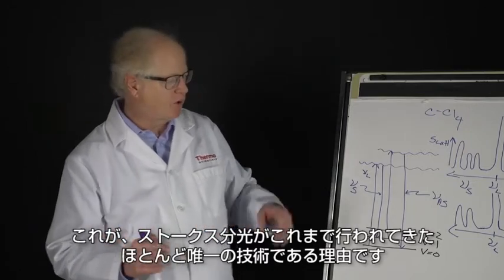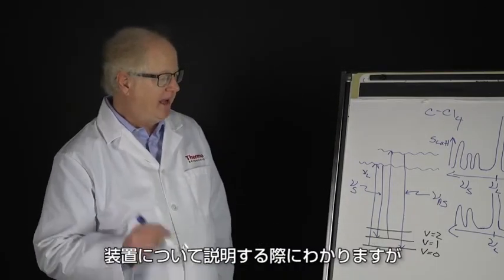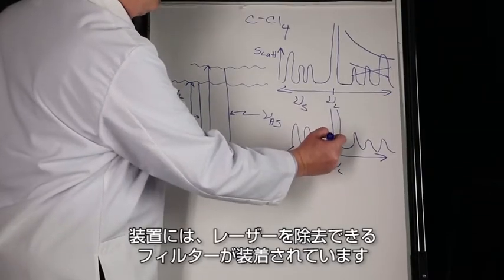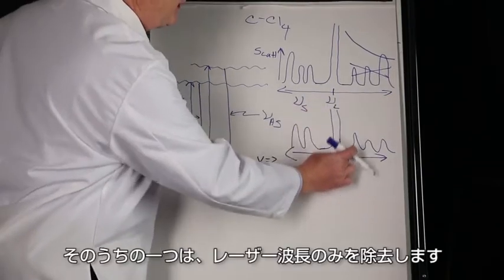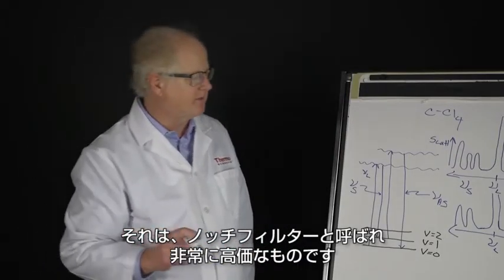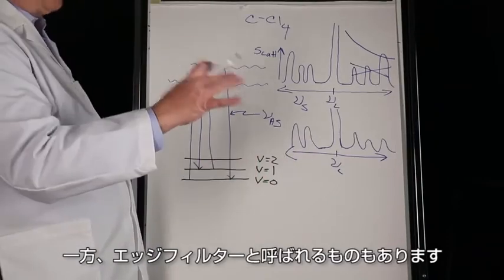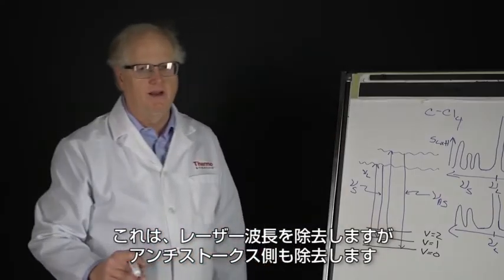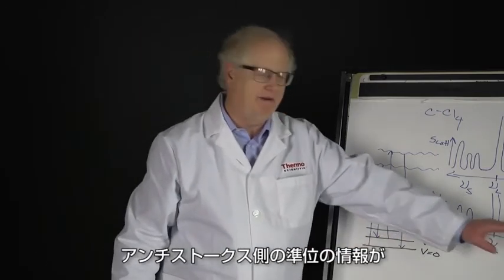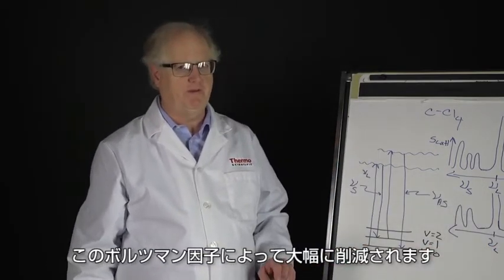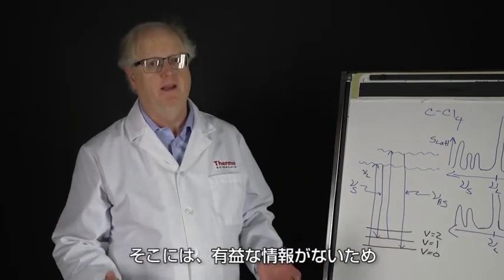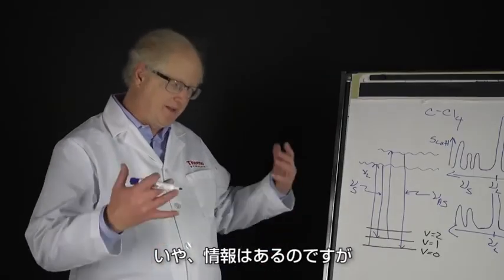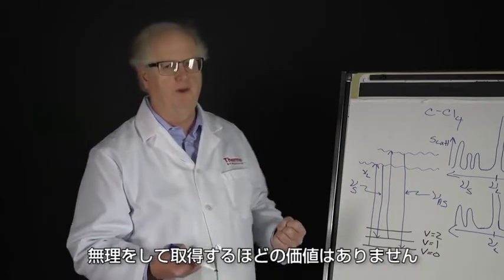So this is why Stokes spectroscopy is almost the only one ever done. As we'll see later when we talk about the instrumentation, there are filters which allow us to eliminate the laser, and there are mainly two kinds. One of them eliminates just the laser—that's called a notch filter, and it's quite expensive. On the other hand, there's something called a bandpass filter which would eliminate it but also eliminates the anti-Stokes side. Those filters are a lot cheaper. And because the level of information on the anti-Stokes side is so much reduced by this Boltzmann factor, those are the filters many vendors will choose to use because there's not useful information. Well, the information is there—I'm just saying the intensity is so much lower that it's not worth the fight to get it.